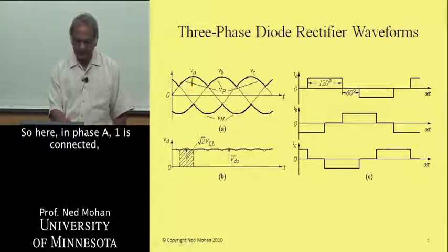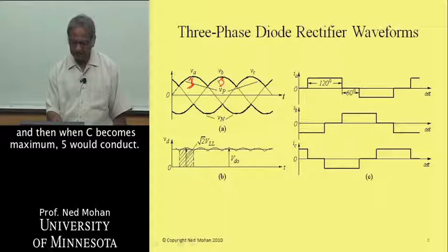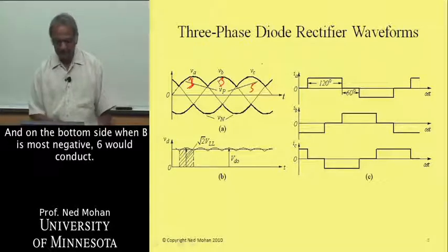In phase A, one is connected, and then as soon as B becomes maximum, then three would conduct, and then when C becomes maximum, five would conduct.